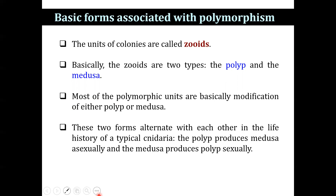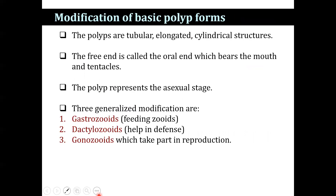We shall discuss the modifications of the basic polyp form. Polyps are tubular structures — elongated, cylindrical — with the free oral end bearing the mouth and tentacles. The polyp represents the asexual stage. Three general modifications are: gastrozooids, also called nutritive zooids, for food ingestion; dactylozooids, which are protective zooids; and gonozooids, which are reproductive zooids.